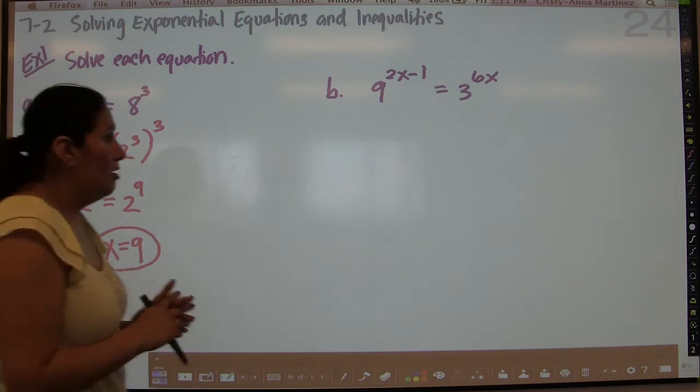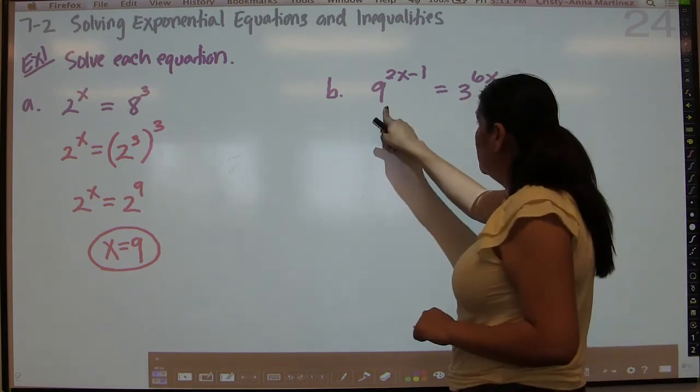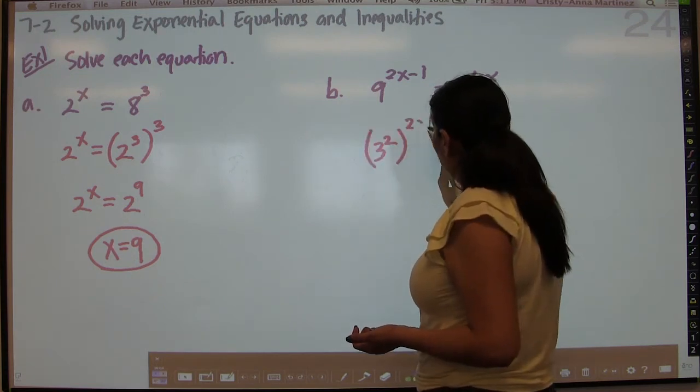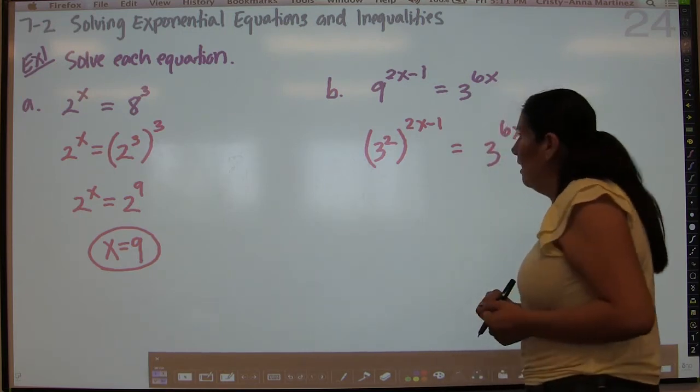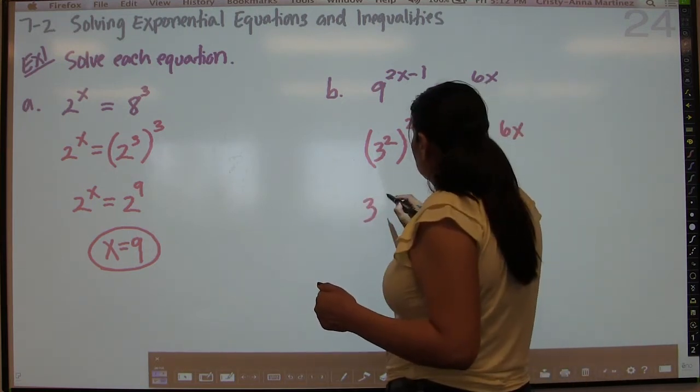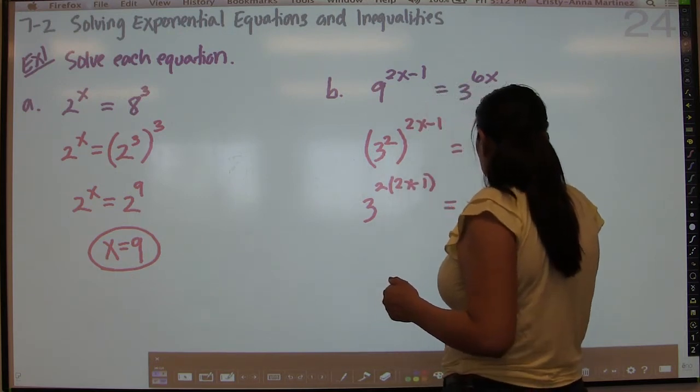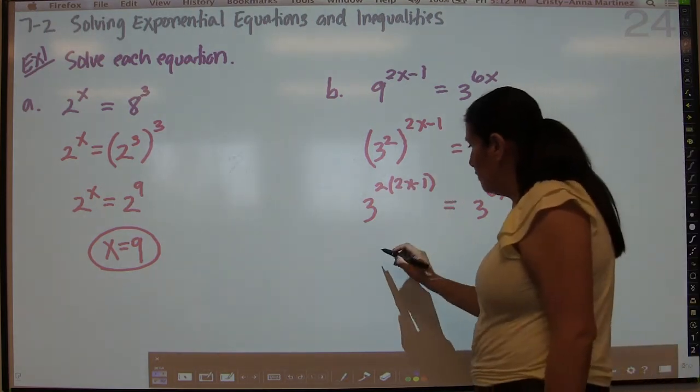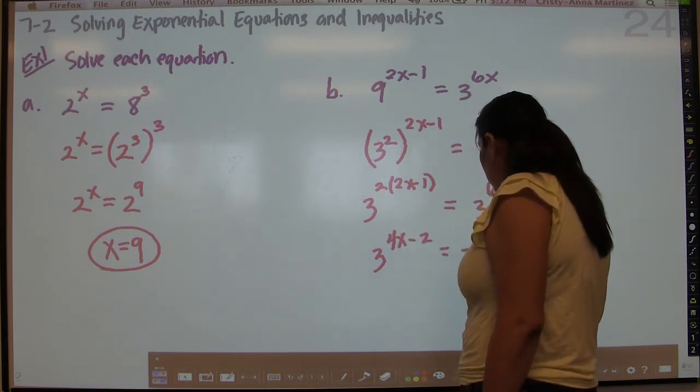Again, our goal is to get both sides to have the same base. Here we see that we have 9, so the 9 can become 3 squared. And then to the 2x minus 1 power, and then 3 to the 6x. And then because you have a power raised to a power, you multiply the exponents, so you're going to get 3 to the 2 times 2x minus 1 equals 3 to the 6x. This is going to become 3 to the 4x minus 2 equals 3 to the 6x.